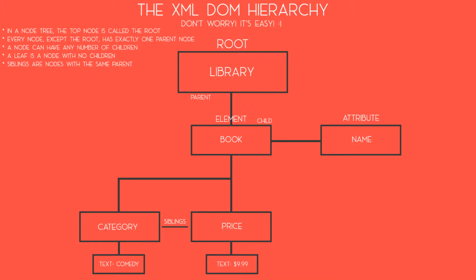If you're confused about what a node is, let me explain it like this. According to the XML DOM, everything in an XML document is a node. The entire document is a document node. Every XML element is an element node. The text in the XML elements are text nodes. And every attribute is an attribute node. I hope that clears things up. Now let's head over to the next module and get practical and put all our newly found knowledge to use.